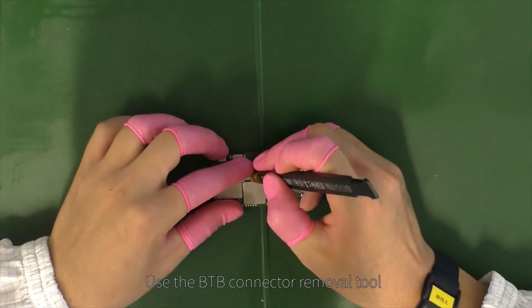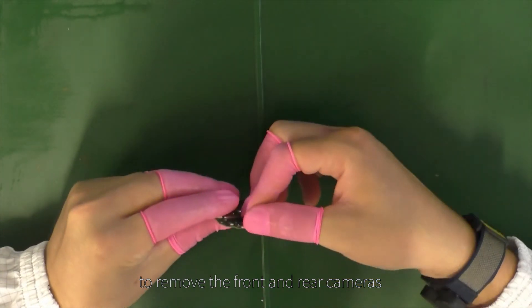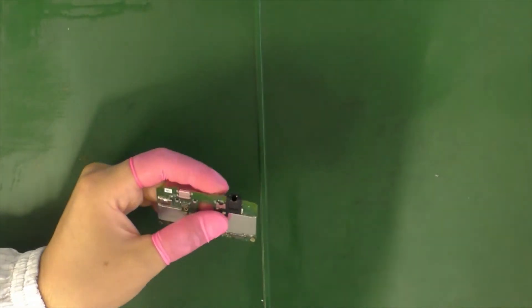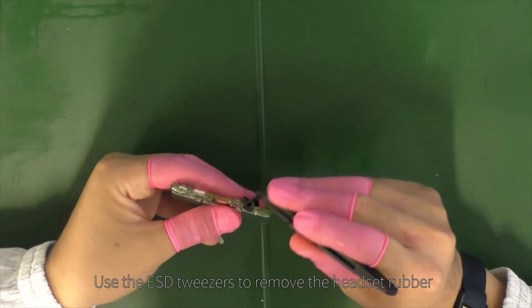Use the B2B connector removal tool to remove the front and rear cameras. Use the ESD tweezers to remove the headset rubber.